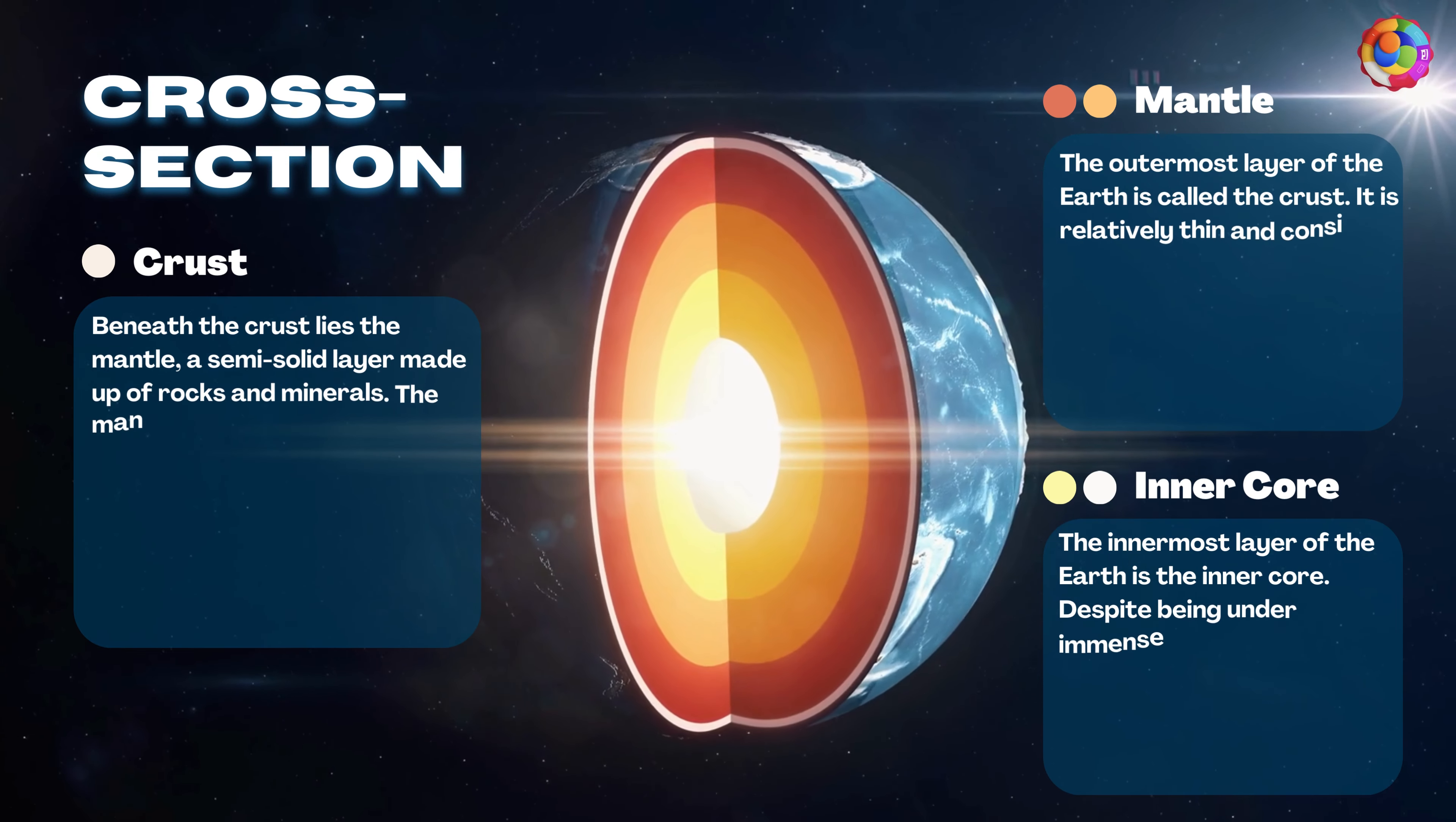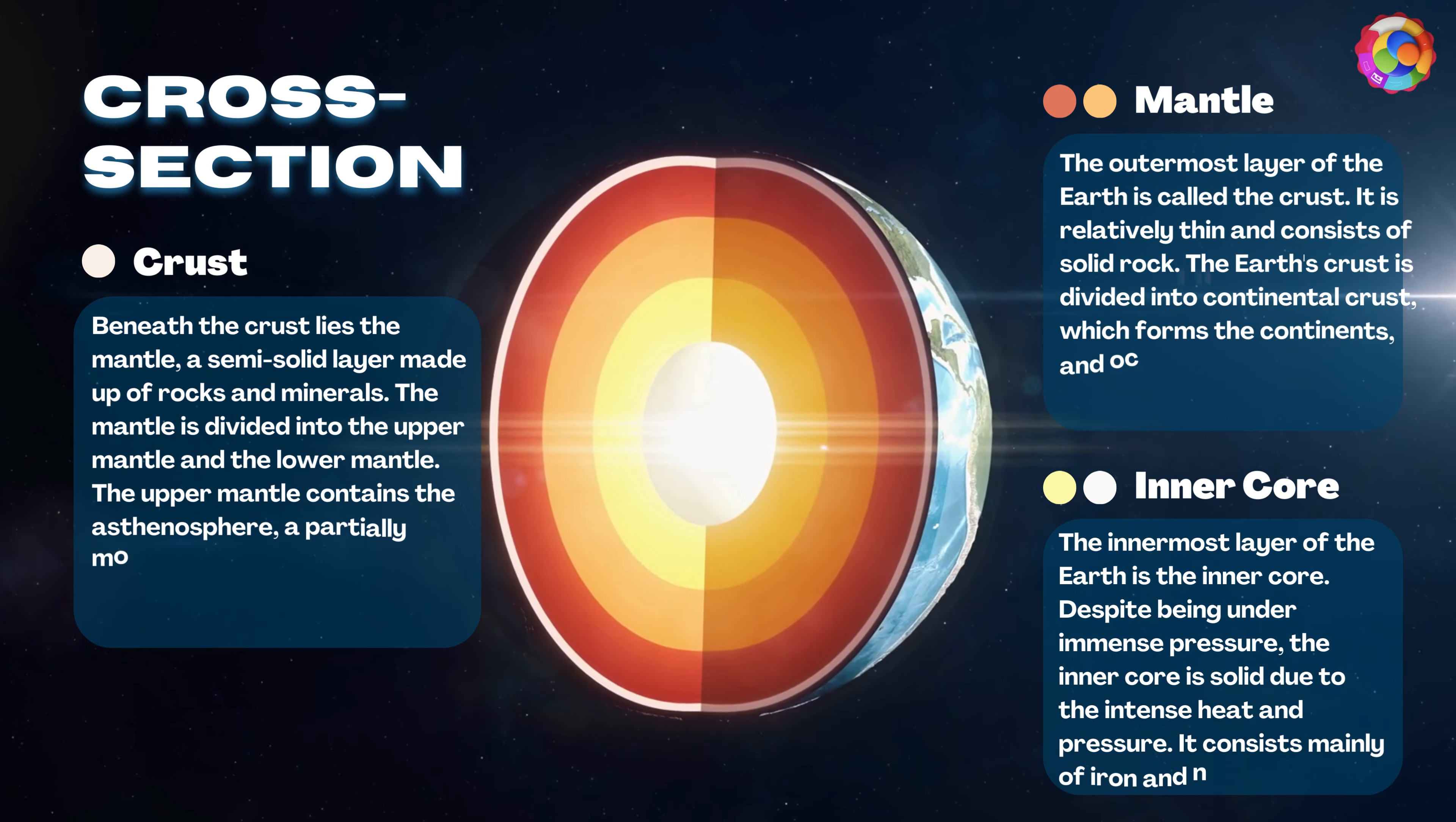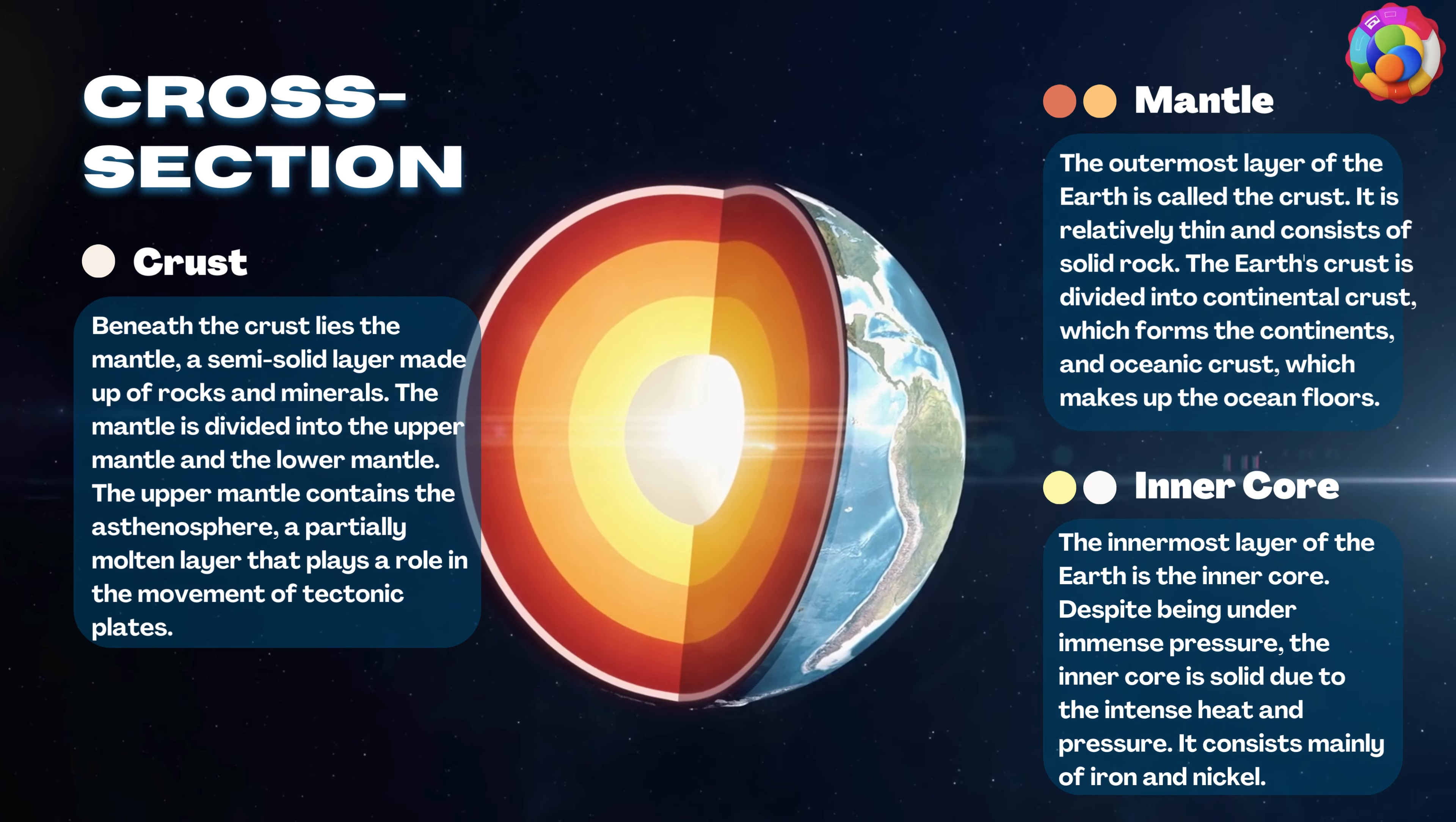Inner core: The innermost layer of the Earth is the inner core. Despite being under immense pressure, the inner core is solid due to the intense heat and pressure. It consists mainly of iron and nickel.